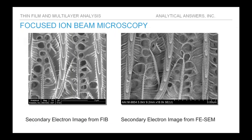An example is shown here — a high magnification image of the scale on a butterfly wing. On the left is the secondary electron image formed using the FIB tool, and on the right is the secondary electron image from the same field of view using our field emission SEM. While the resolution is not quite as good in the FIB tool, you can clearly see fine detail well below micron resolution, sufficient to get an overall impression of the surface structure and navigate to areas of interest.